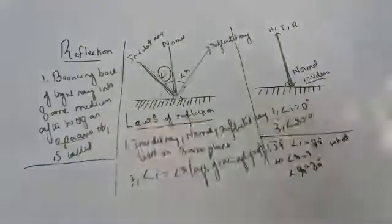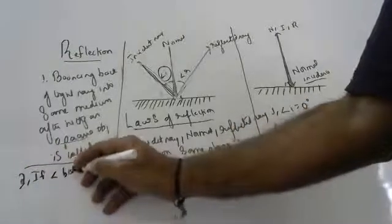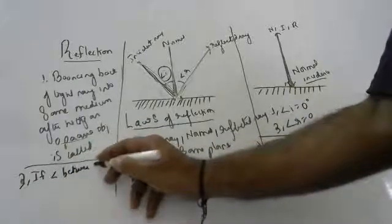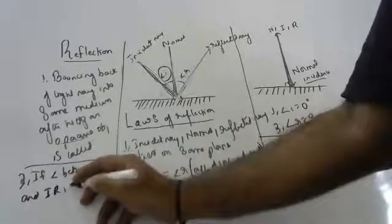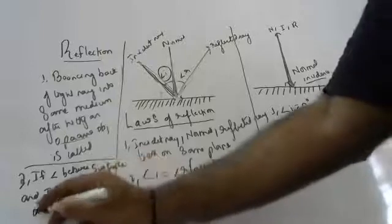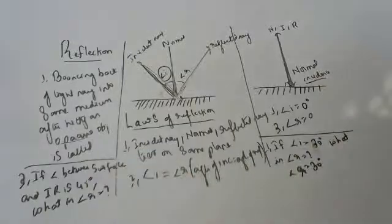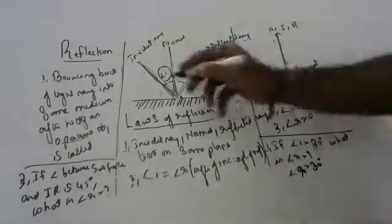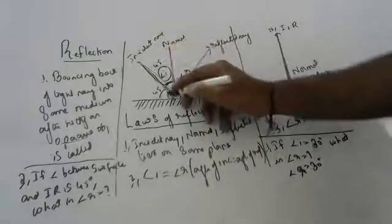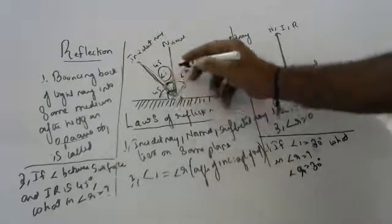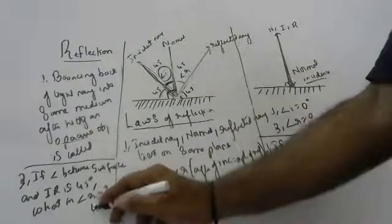One more question: if the angle between the surface and the incident ray is 45 degrees, what is the angle of reflection? The angle between the surface and the ray is 45 degrees, so the angle of incidence — measured from the normal — is also 45 degrees, because the normal is 90 degrees to the surface and 90 minus 45 equals 45. Therefore the angle of reflection is also 45 degrees.